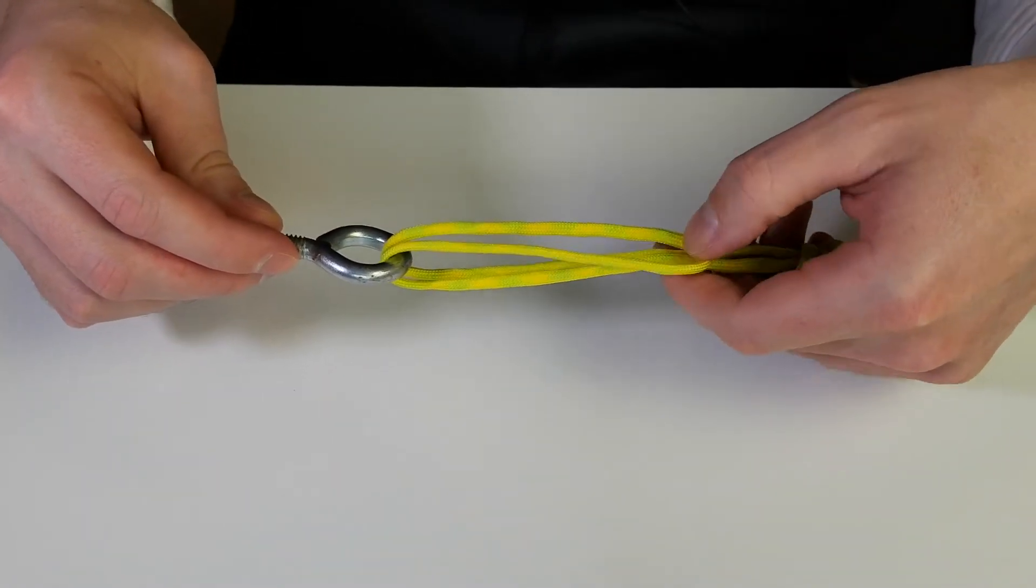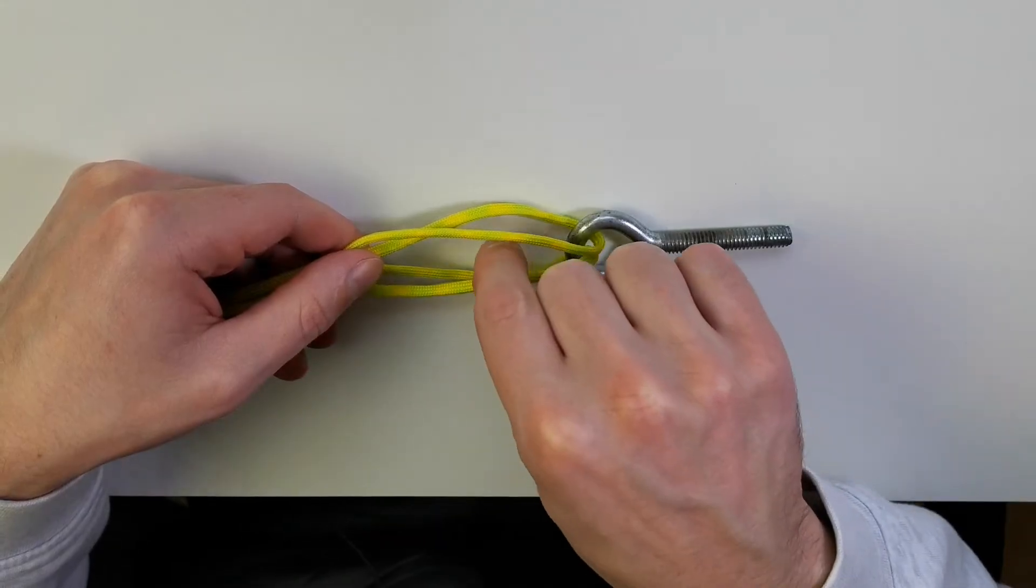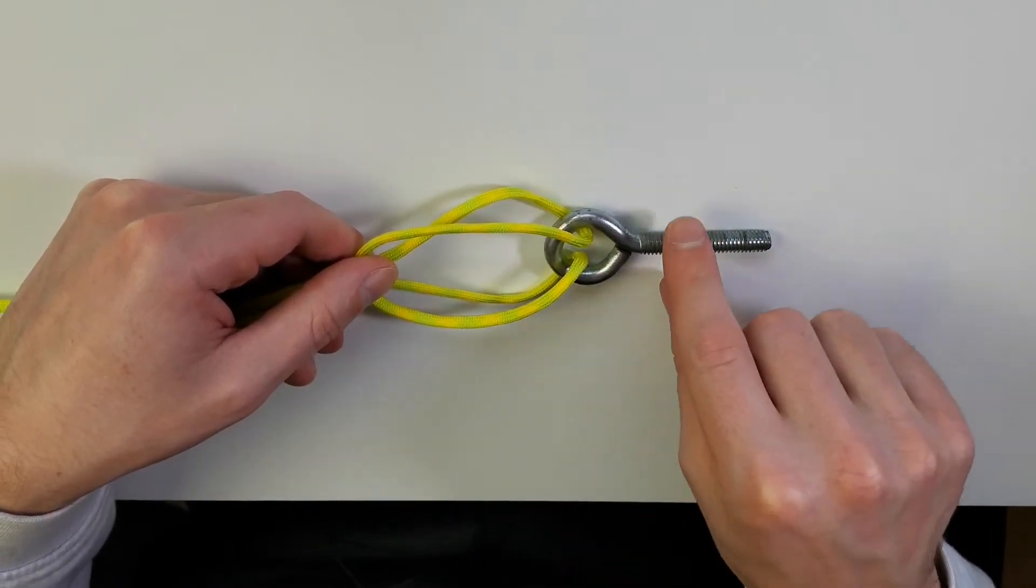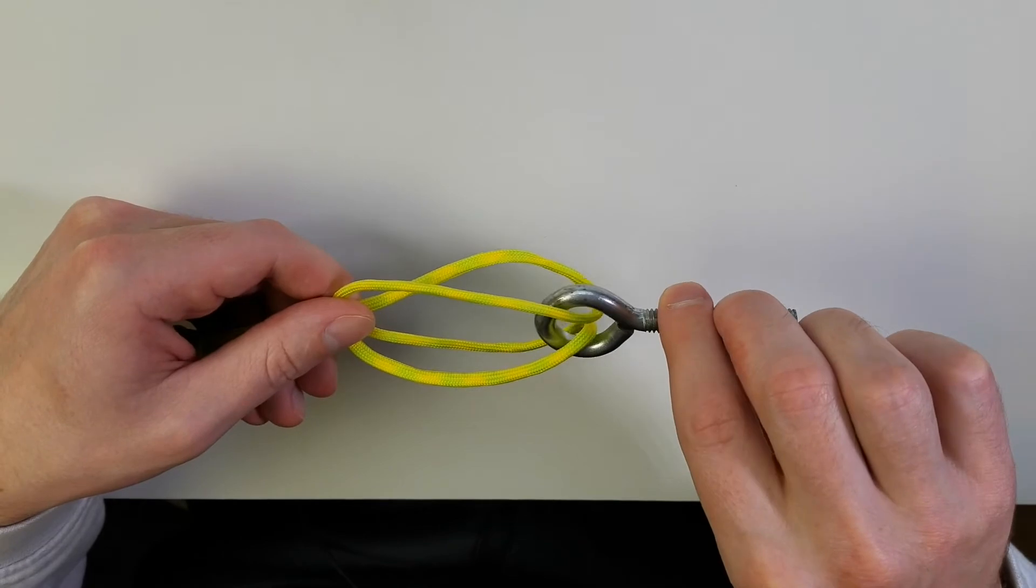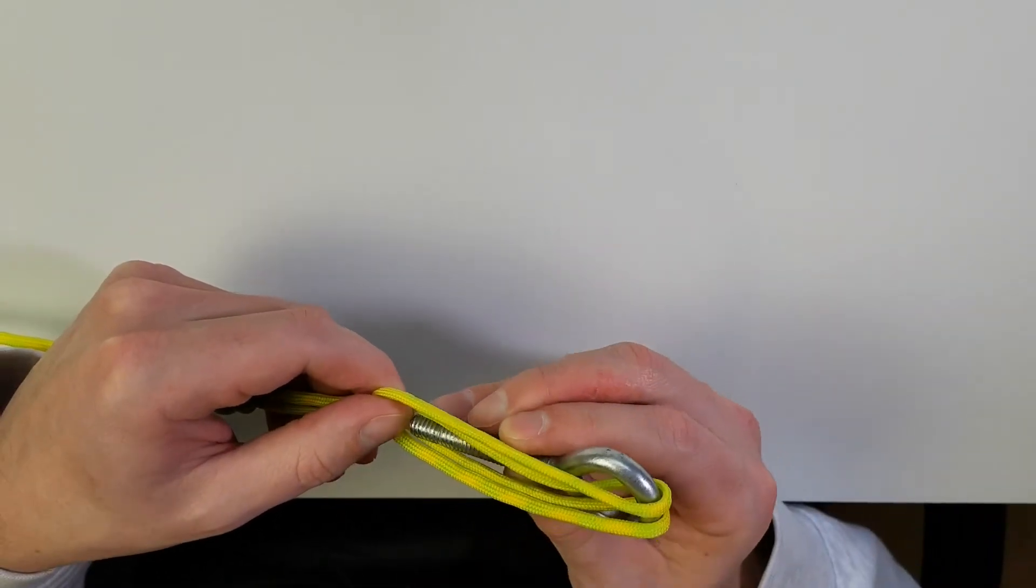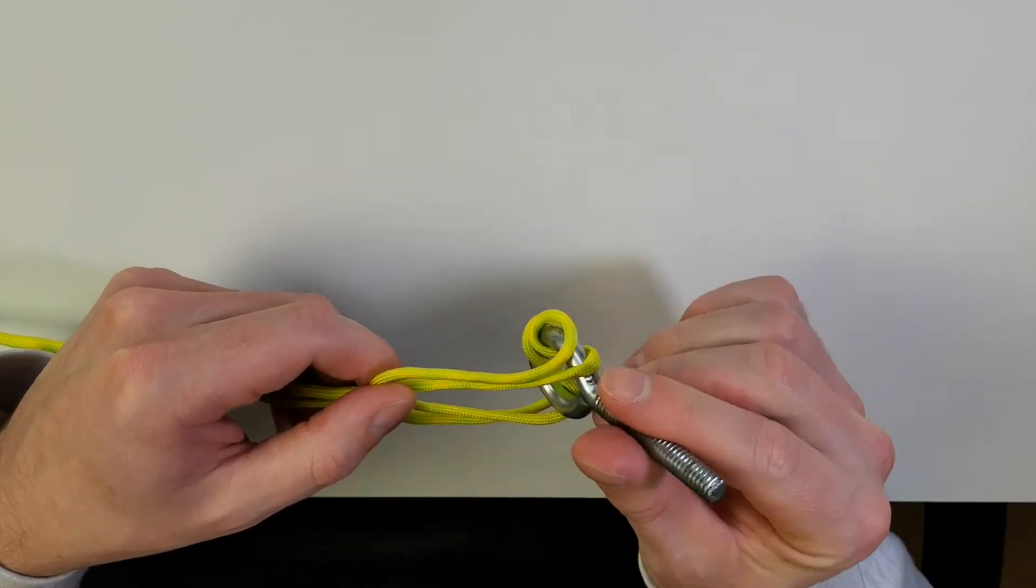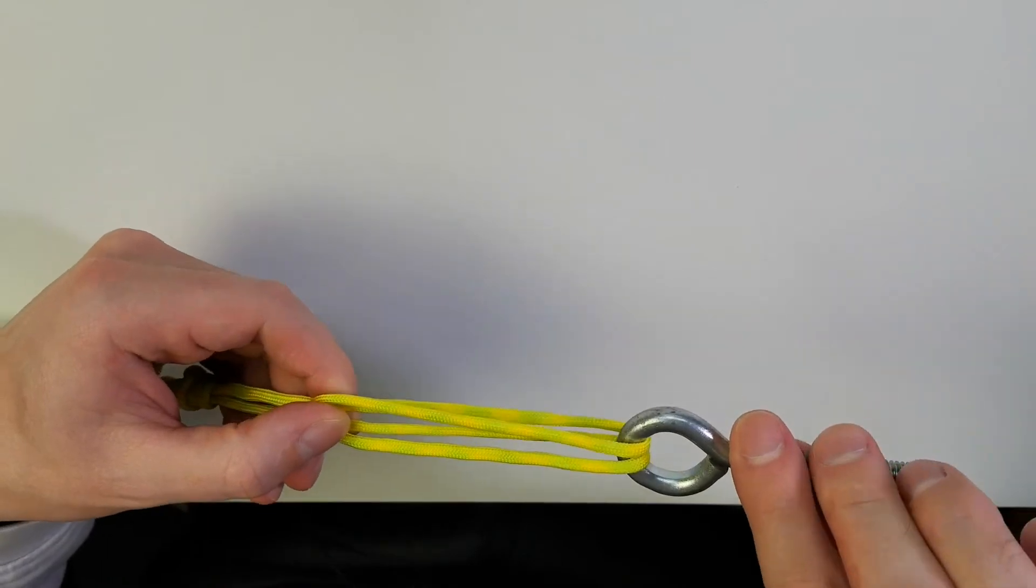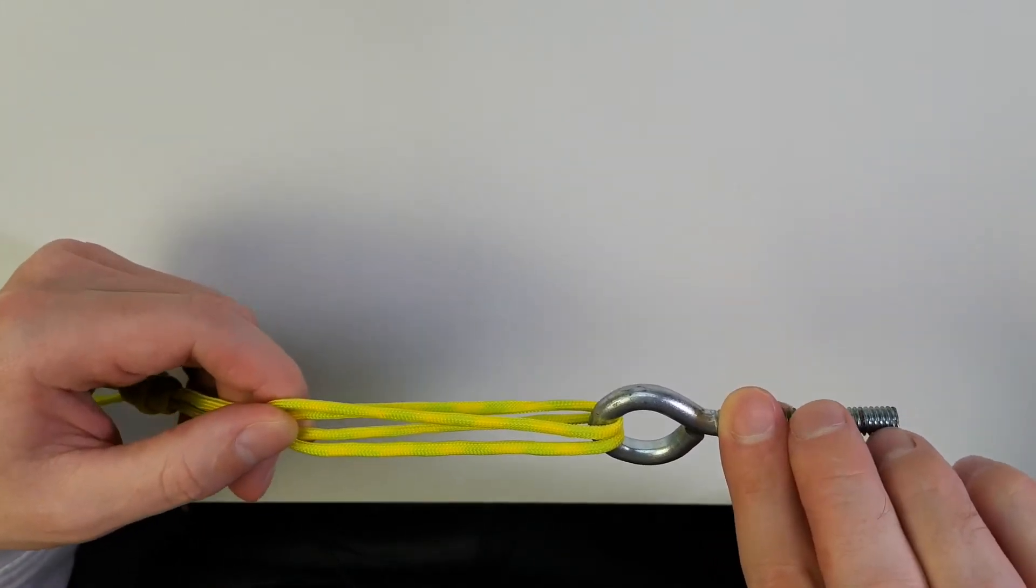You want to hold the line just like that. You can spread these out a little bit and there's going to be this loop here. What we're going to be doing is taking our swivel and turning it, putting it through and twisting it just like that.